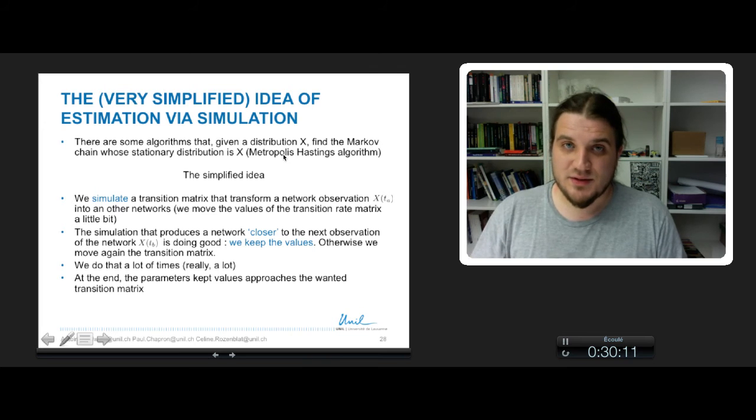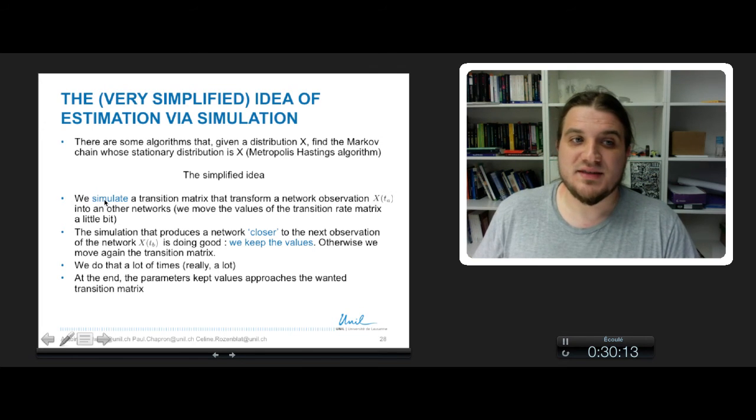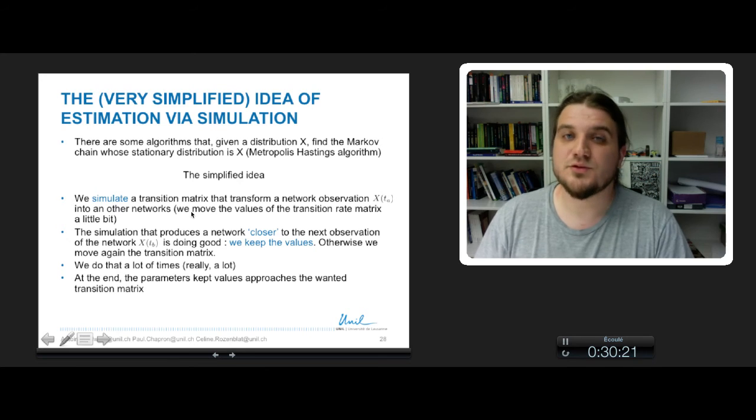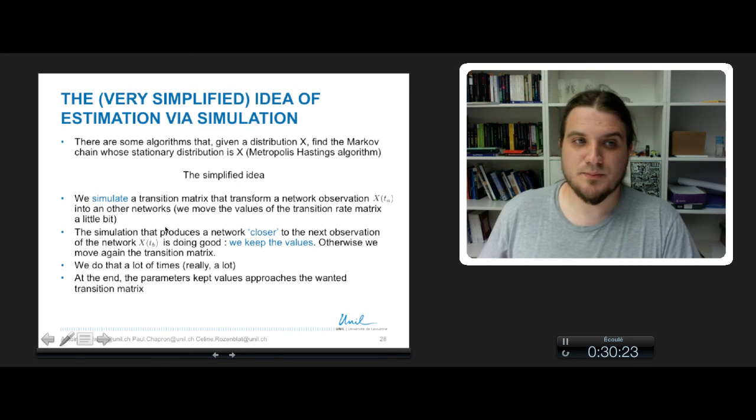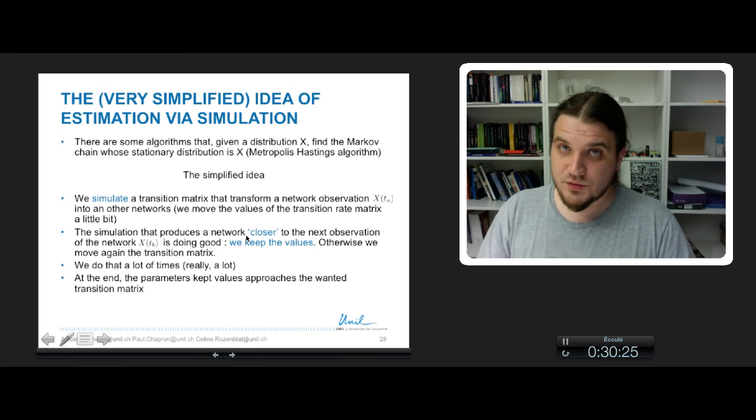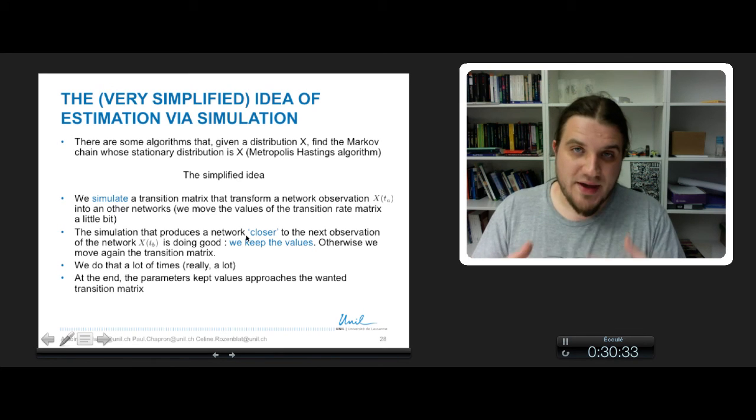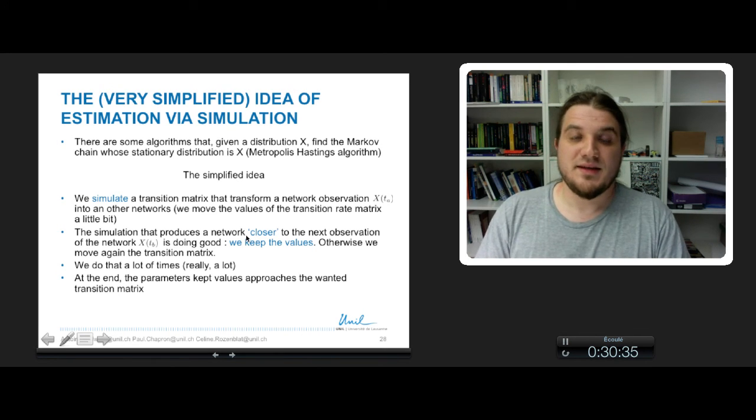The idea, again very simplified, is that we simulate a transition matrix that transforms a network observation at time tA into another network. We move the values of the transition rate matrix and the simulations that produce a network closer to the next observation that we have. So a simulation with the transition rate matrix that upgrades the situation is doing good.